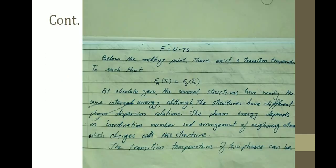F is equal to U minus TS. So the energy of the system can be found out by this relation.